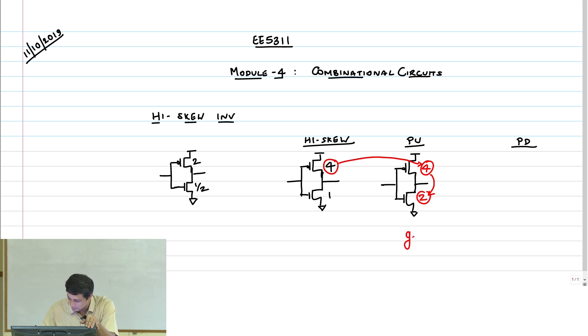What is the logical effort now? G pull-up, it is 5C divided by 6C, right? So you get 5 by 6.